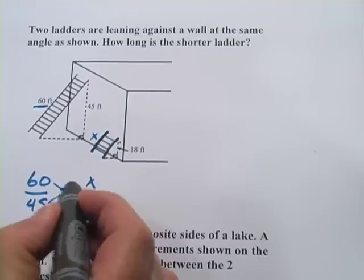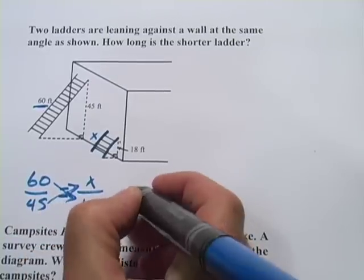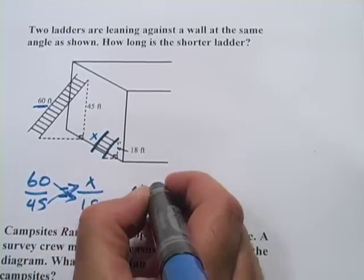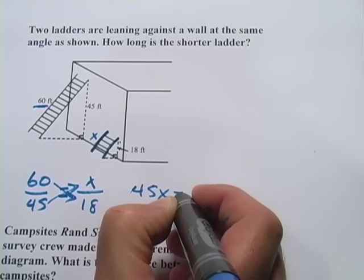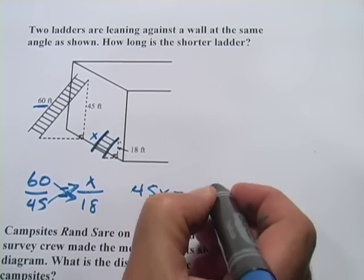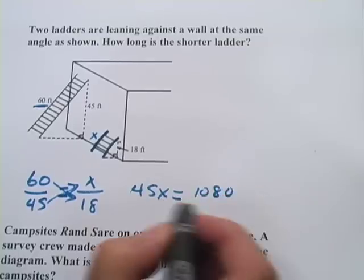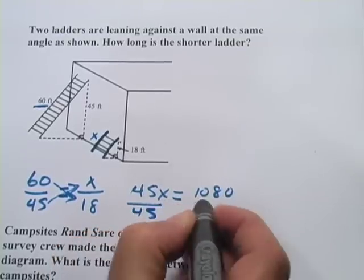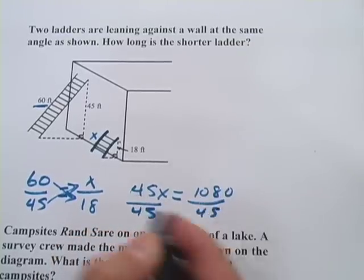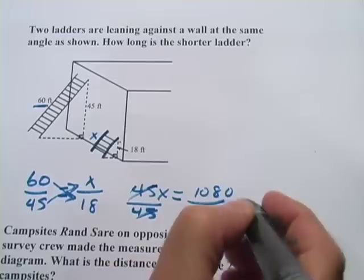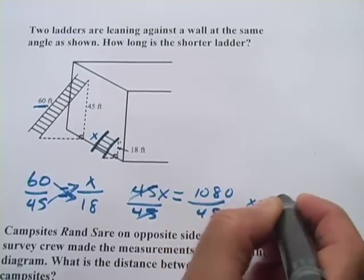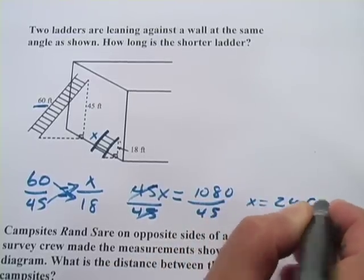Now we just cross-multiply. So 60 times 18 and 45 times x. So we get 45x equals 1080, and then we simply divide by 45, and we have x equals 24 feet.